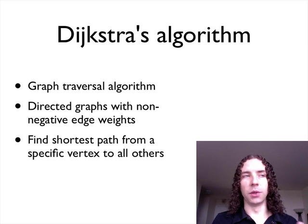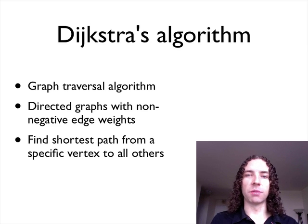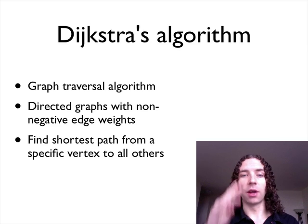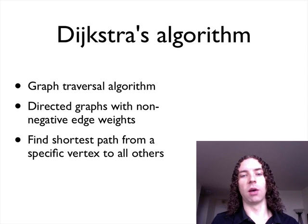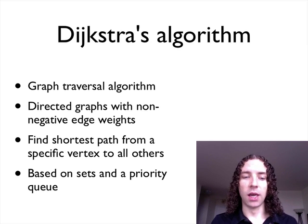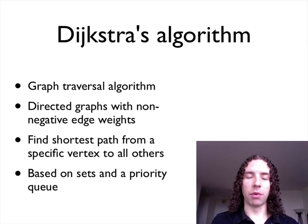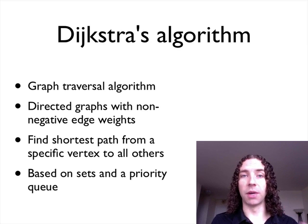What Dijkstra's algorithm tells you is not just the shortest distance between two points — you give it a starting point, and when the algorithm is complete, it can tell you the shortest path to any other vertex in the entire graph. There's also a way to easily determine the specific path to take, not just how long it would take. In terms of abstract data types, it's based on a bunch of sets and a priority queue. The priority queue is actually the important part, and it's what changes the computational complexity depending on your implementation.